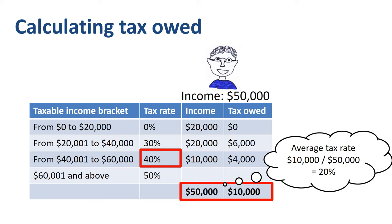In the progressive income tax system, the average tax rate is always lower than the marginal tax rate.